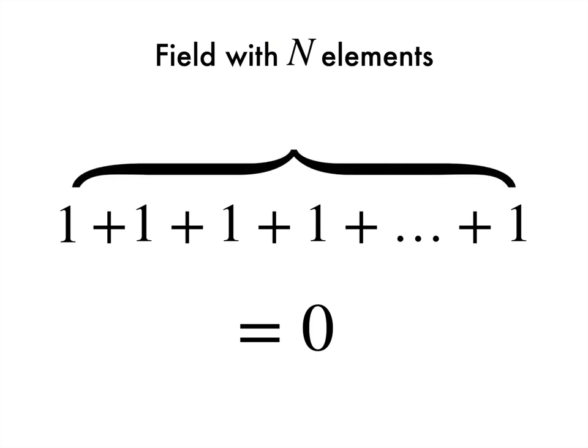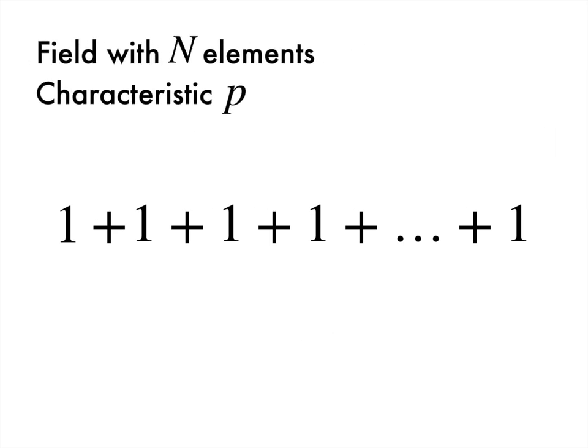The number of ones we added is called the characteristic of the field. The characteristic is the smallest amount of ones you need to add together to get zero. For our field, let's write this number as P. We can straight off make an astute observation. This number P has to be prime. Now, why is that?